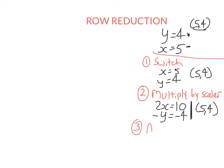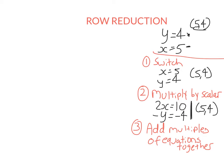Another thing I can do is I can add multiples of one equation to the other and I will not change the solution. For example, with y equals 4 and x equals 5, I could add them together and get x plus y equals 9 — I haven't changed the solution. I could also say x plus 2 times y equals 5 plus 8, which is 13, and if I solve those two equations simultaneously I still get x equals 5 and y equals 4.